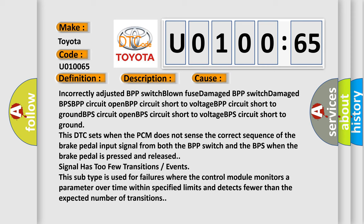This DTC sets when the PCM does not sense the correct sequence of the brake pedal input signal from both the BPP switch and the BPS when the brake pedal is pressed and released. Signal has too few transitions or events. This subtype is used for failures where the control module monitors a parameter over time within specified limits and detects fewer than the expected number of transitions.